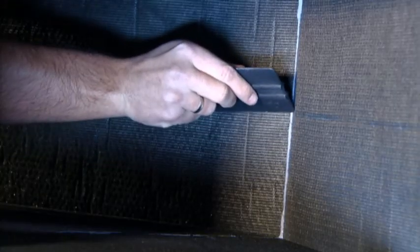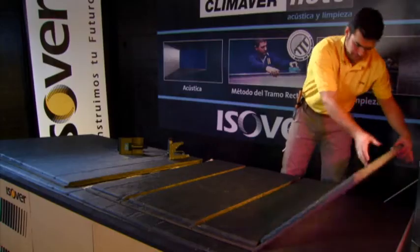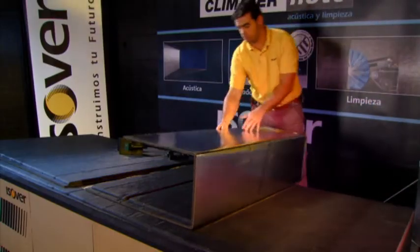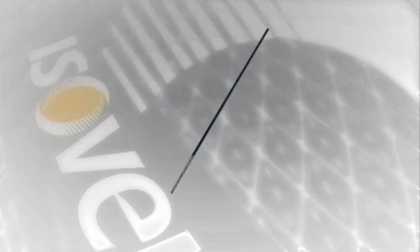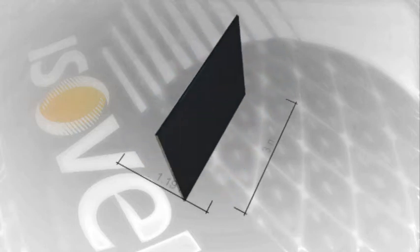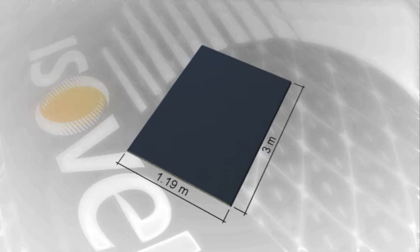KlimaVair are high-density glass wool duct boards used for the installation of self-supporting air ducts. KlimaVair boards are rigid glass wool boards which are 3 metres long and 1.19 metres wide and have a thickness of 25 millimetres.